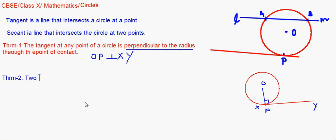The second one says two tangents from common external points are equal.